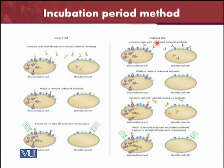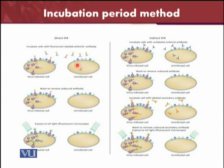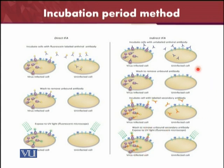This is the direct ELISA and this is the indirect ELISA. We can see how virus-infected cells are detected in both ELISA experiments. In direct ELISA, cells were incubated with fluorescence-labeled antiviral antibodies. In indirect ELISA, cells were unlabeled after incubation. Virus-infected and uninfected controls were included. The experiment is washed to remove unbound antibodies, then labeled with a secondary antibody. Exposed to UV light and examined under a fluorescent microscope. Unbound secondary antibodies are washed away, then exposed to UV light and examined under the fluorescent microscope.